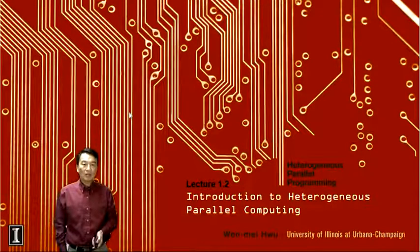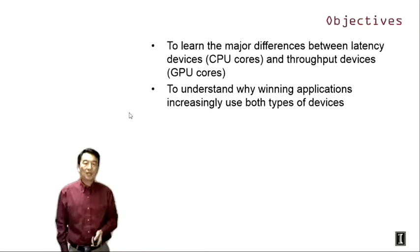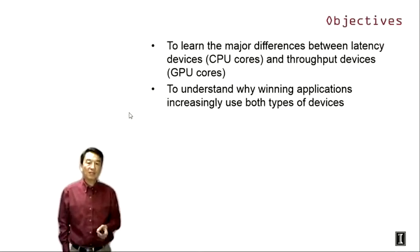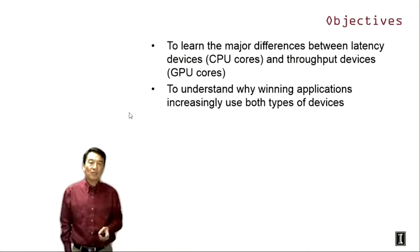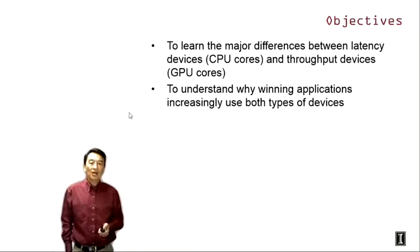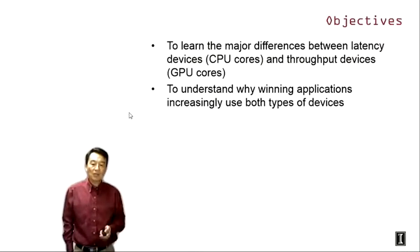Hello everyone. Welcome back to the heterogeneous parallel programming class. This is lecture 1.2, Introduction to Heterogeneous Parallel Computing. The objective of this lecture is for you to learn the major differences between latency devices and throughput devices. Latency devices means CPU cores today, and throughput devices means GPU cores today, and to understand why winning applications are increasingly using both types of devices.